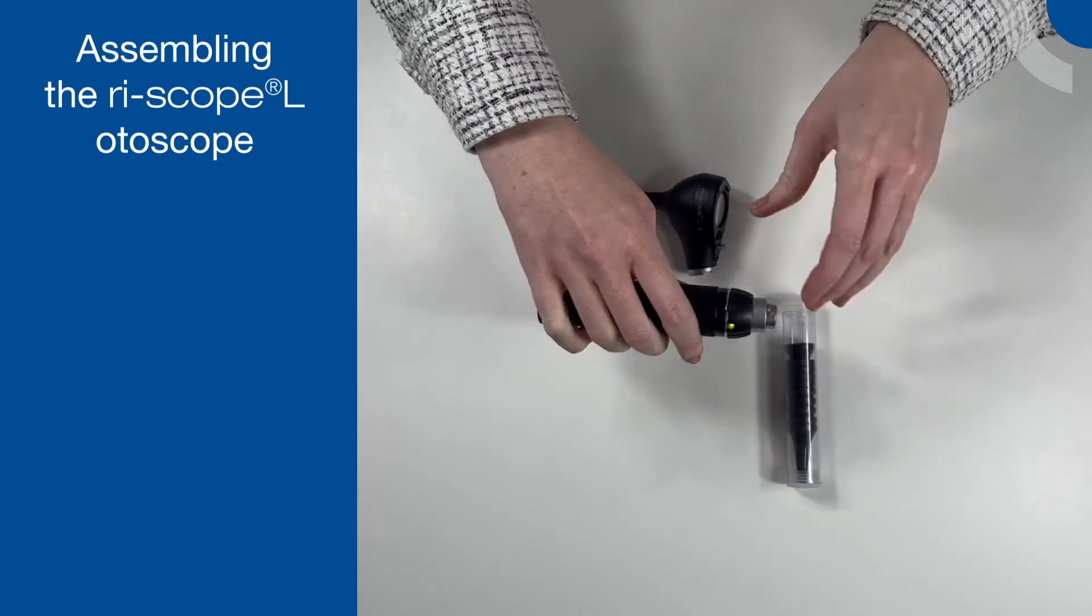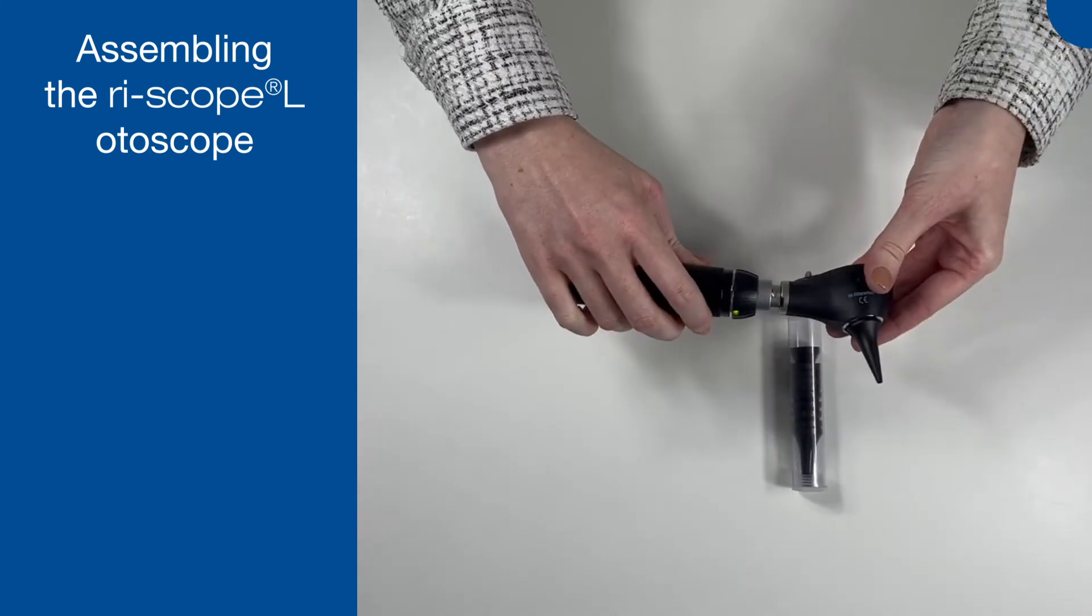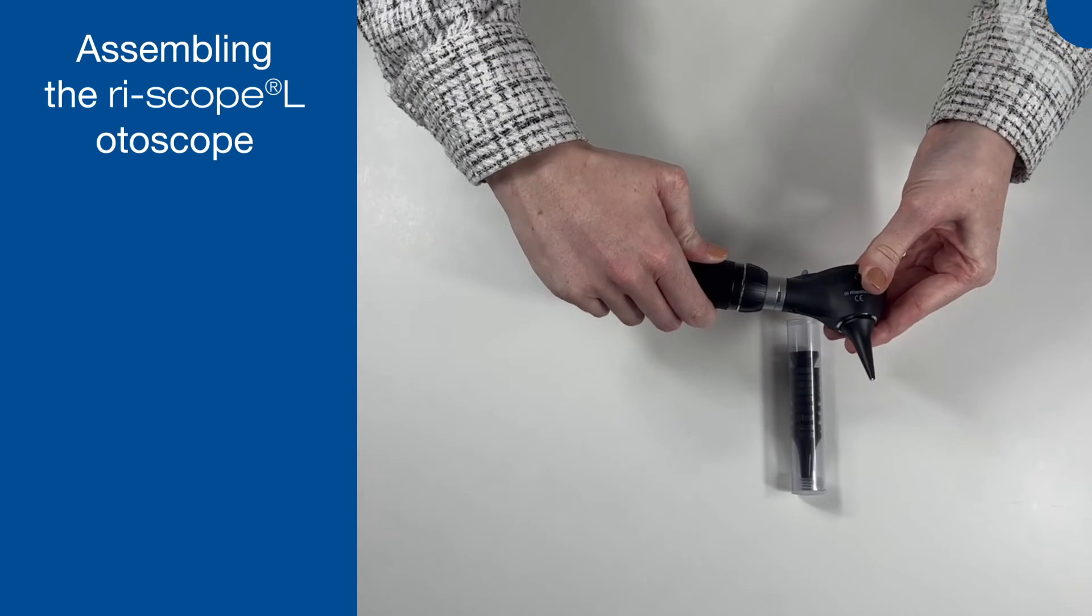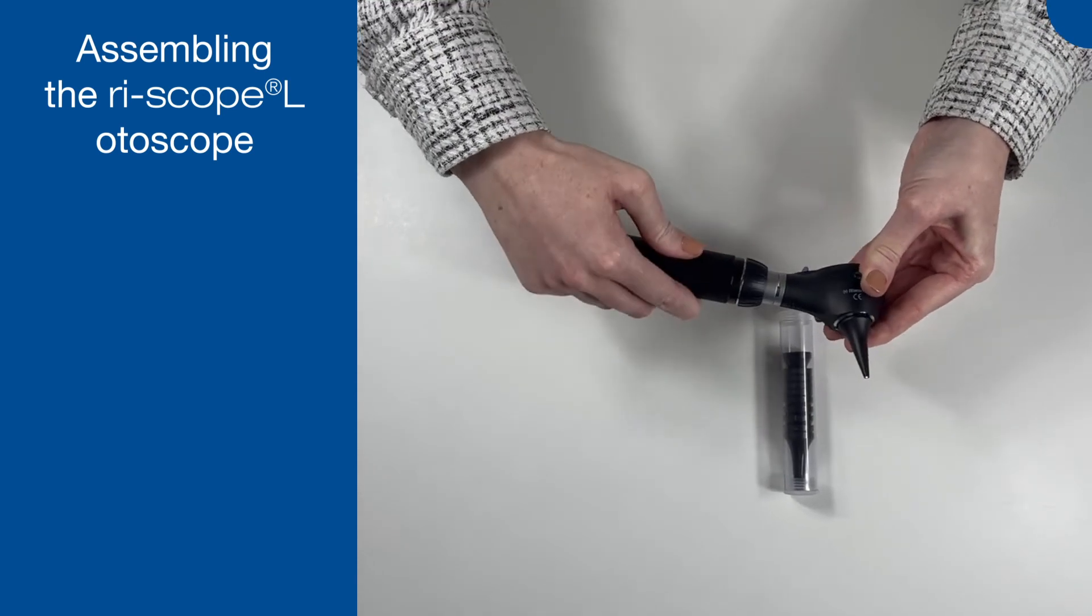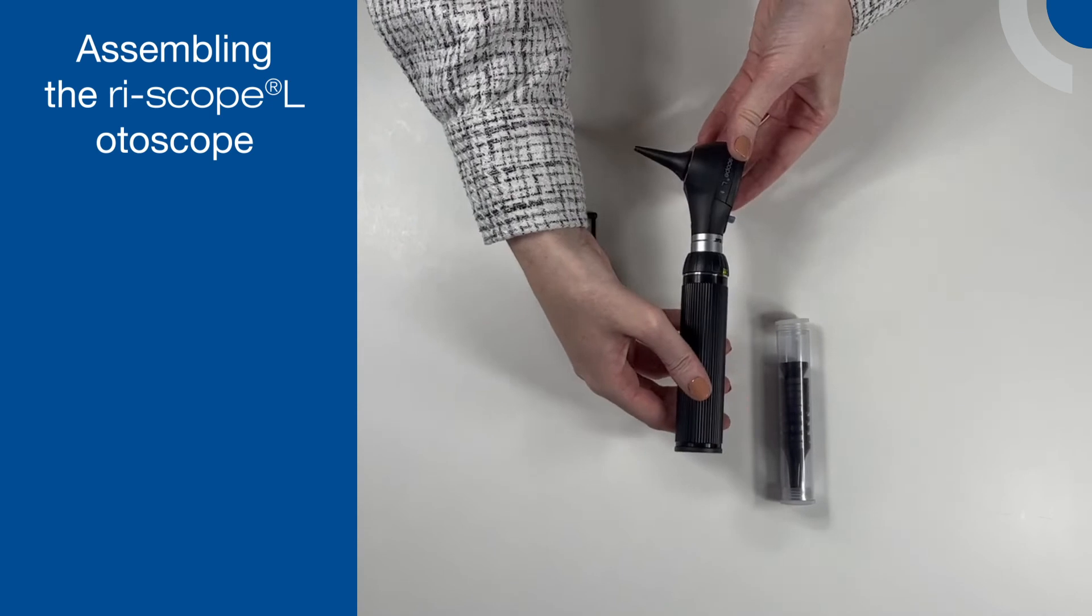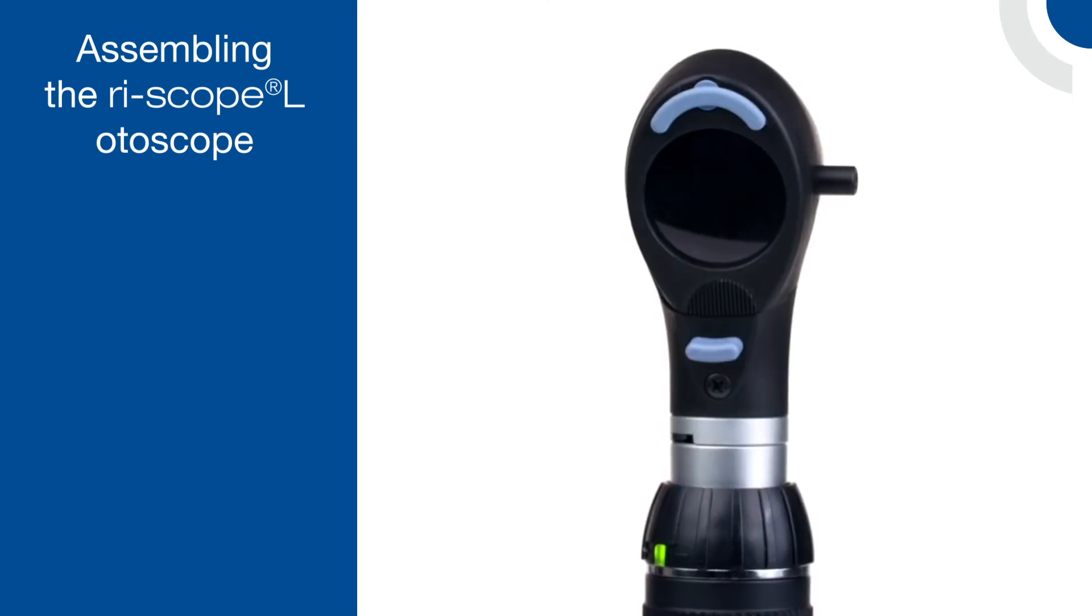To attach the L3 otoscope head, align the bayonet fitting of the otoscope with the bayonet fitting on the collar of the handle. Push the head down into the handle and turn clockwise until it locks. An audible click confirms it is secured.